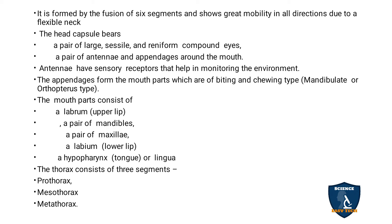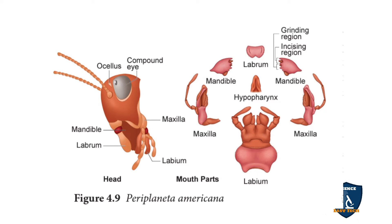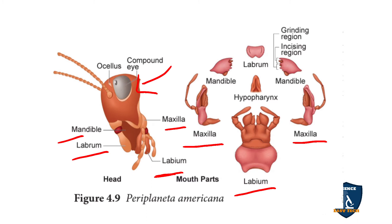In the head region you can see the compound eye, the antenna, the upper lip (labrum), mandibles, maxillae, labium, and hypopharynx. These mouth parts can be seen separately. Drawing the mouth parts of a cockroach is a common exam question.